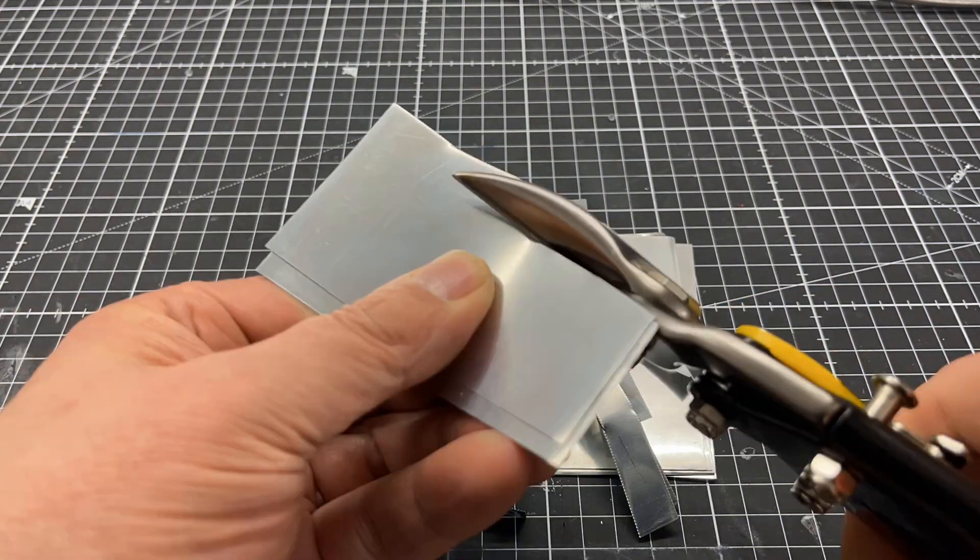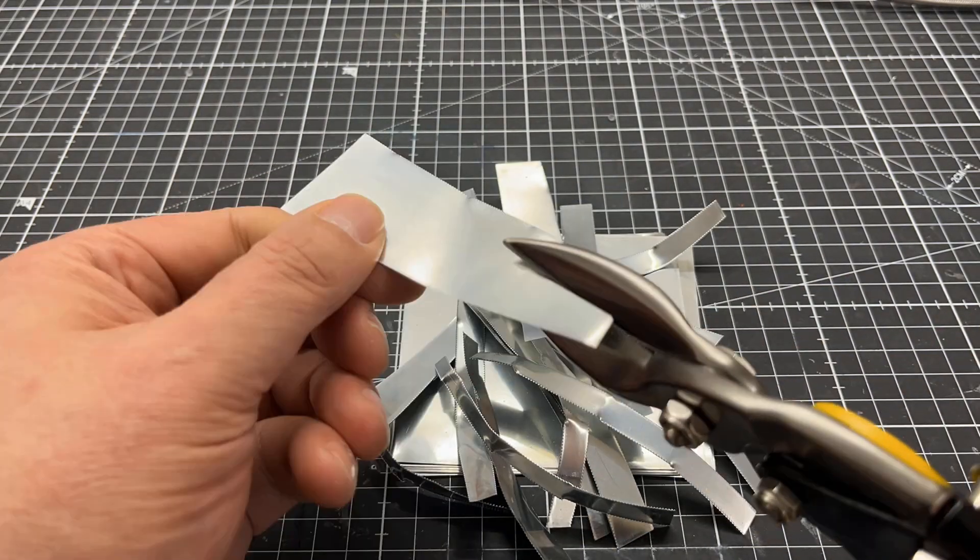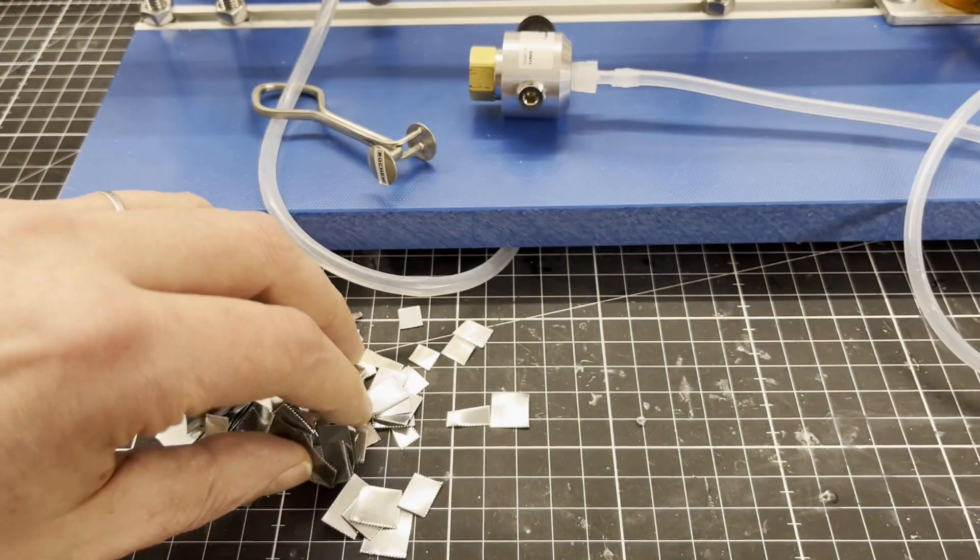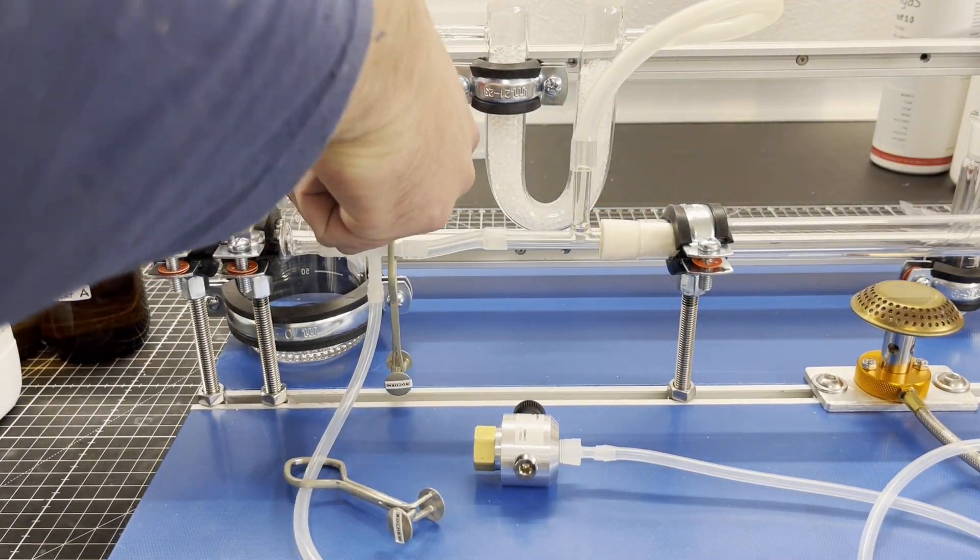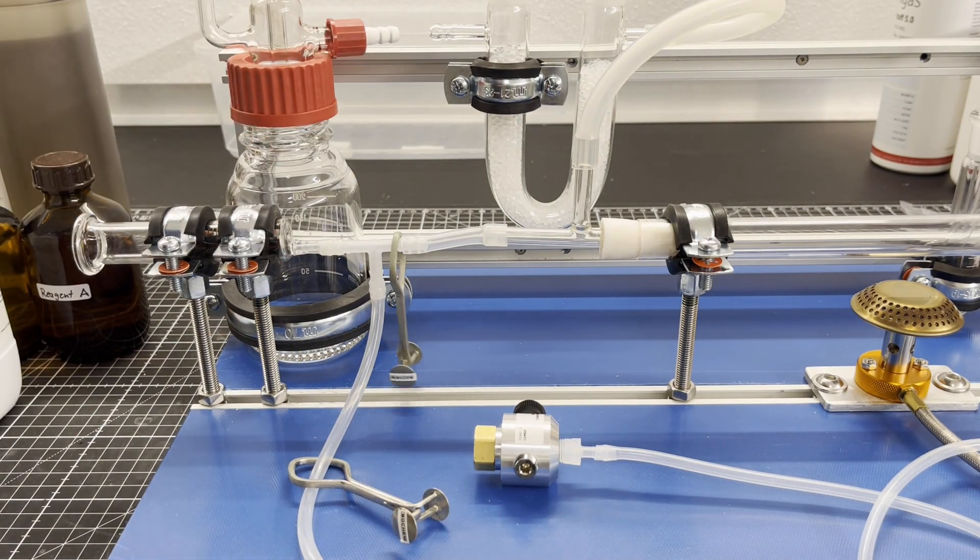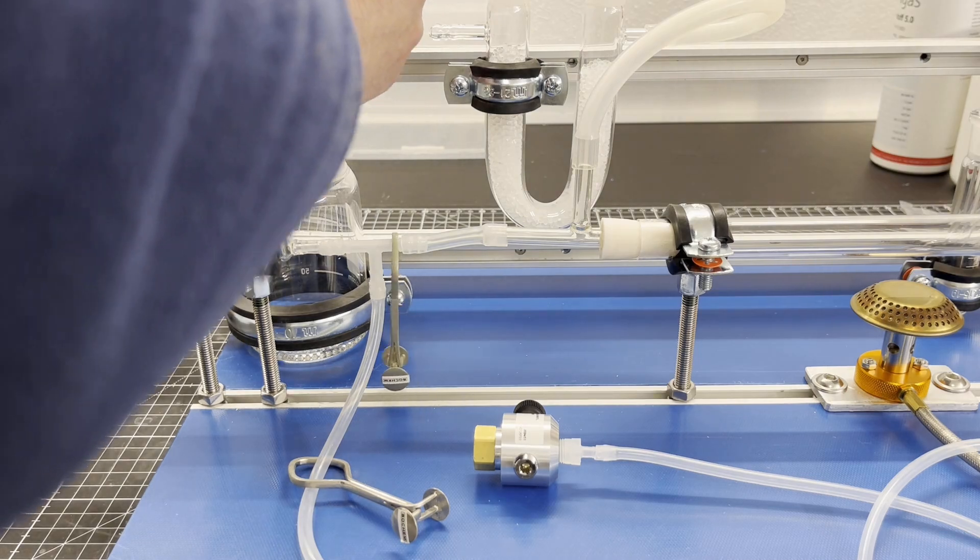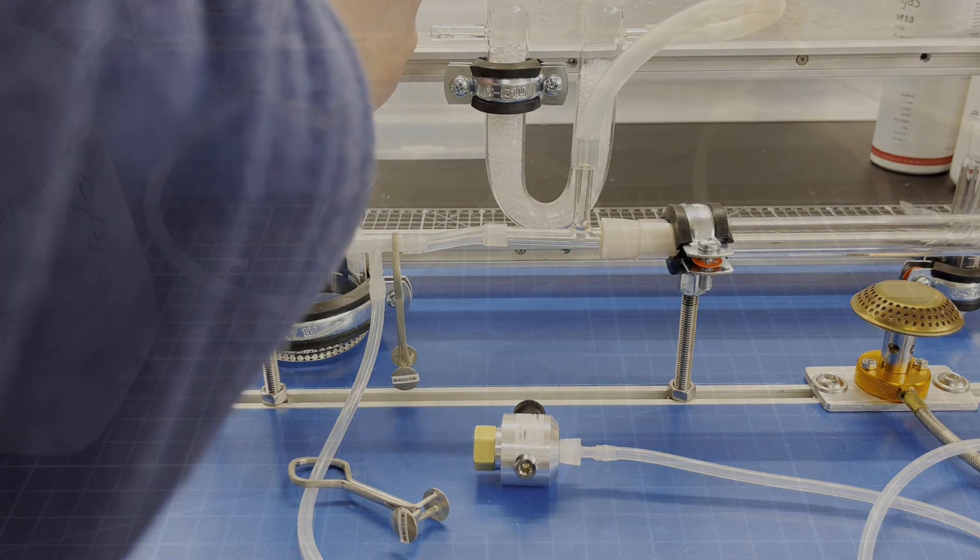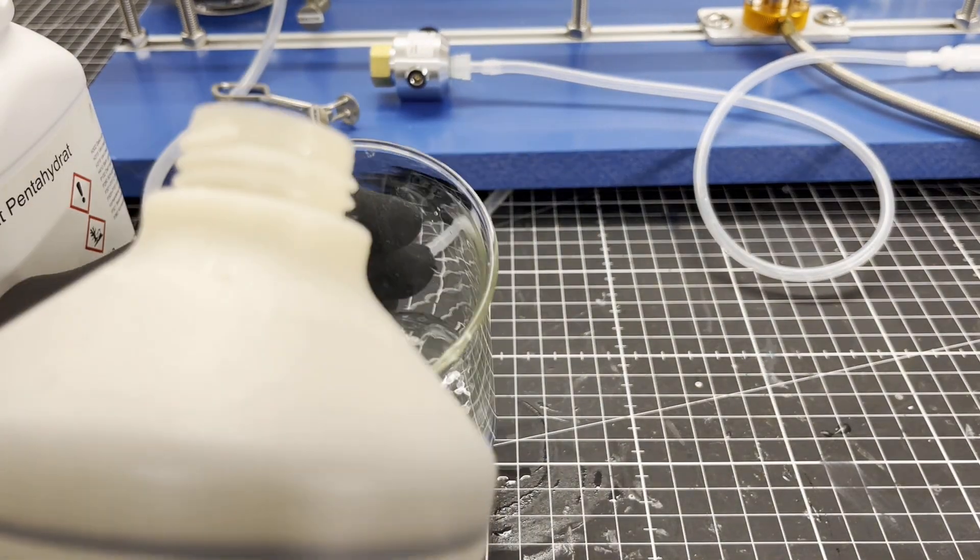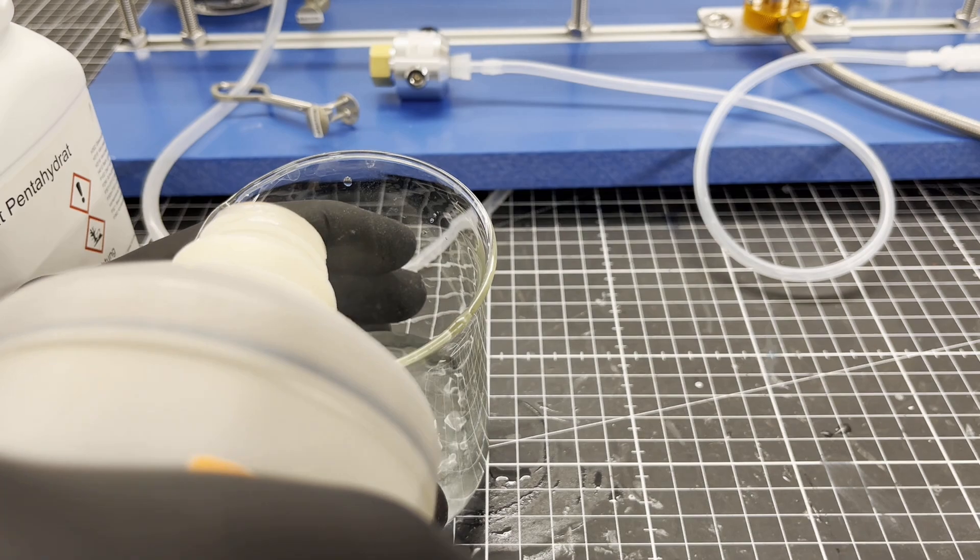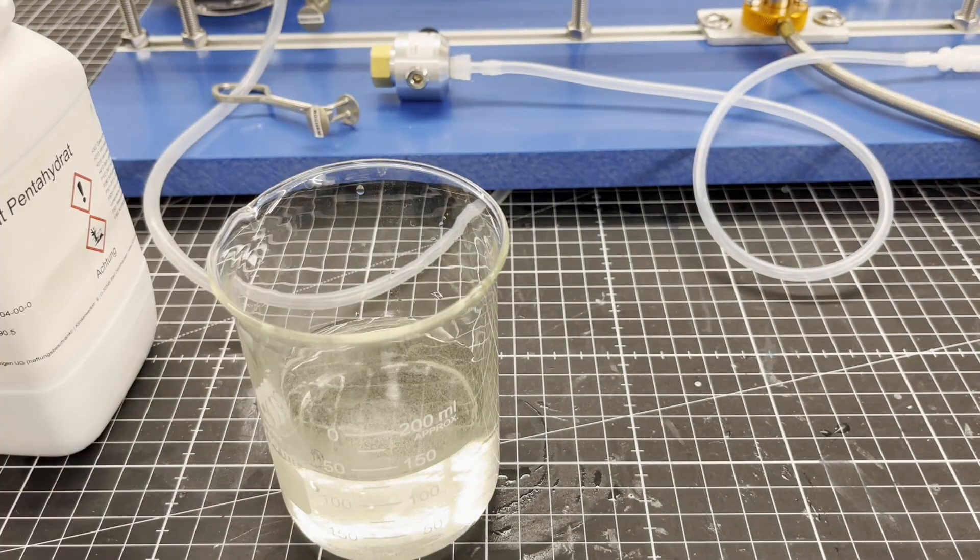About 50 grams of chopped zinc sheet is required to produce the necessary hydrogen. You also need about 50% sulfuric acid. A little copper sulfate is dissolved in it, which accelerates the hydrogen production.